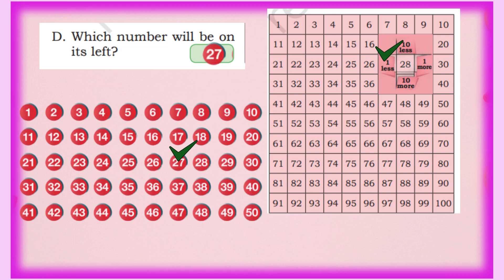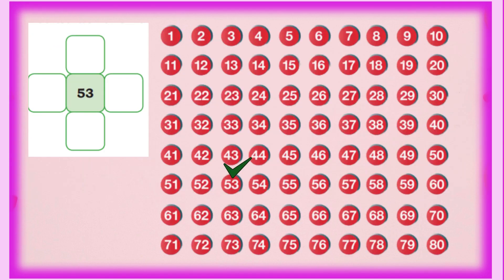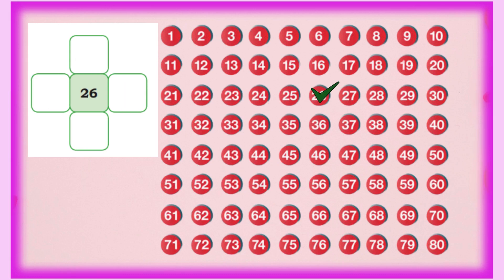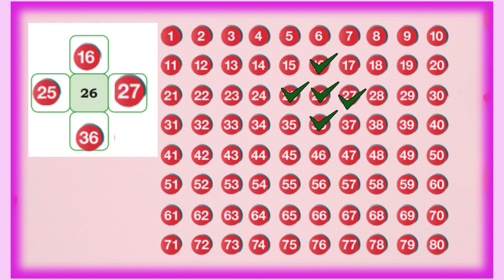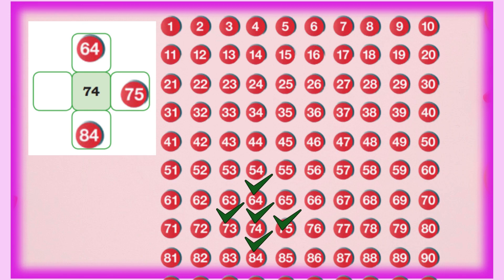Let us do the same for other numbers. For 53: top is 43 (minus 10), bottom is 63 (plus 10), right is 54 (plus 1), left is 52 (minus 1). For 26: top is 16, bottom is 36, right is 27, left is 25. For 74: bottom is 84 (plus 10), top is 64 (minus 10), right is 75, left is 73.